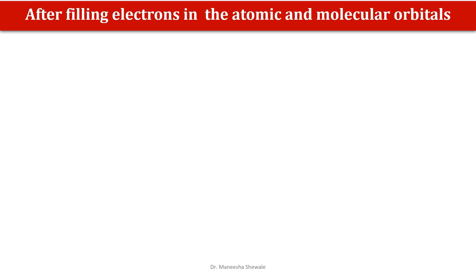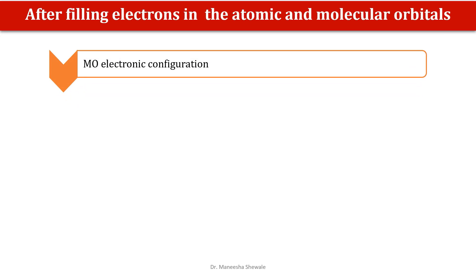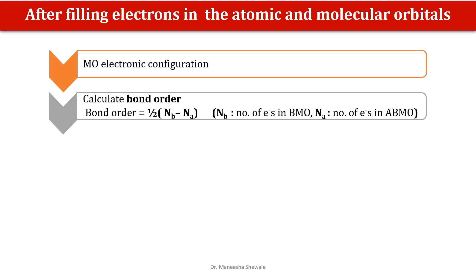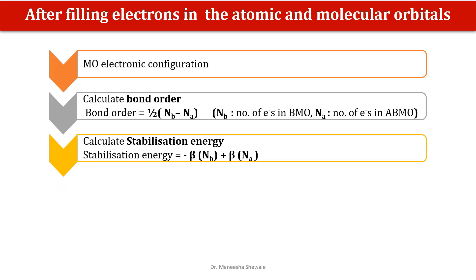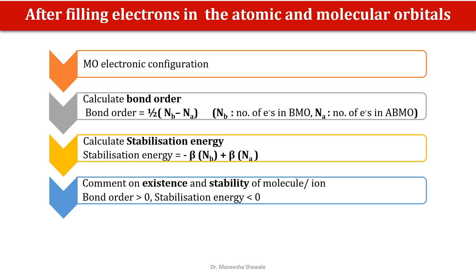After the electrons are filled in the atomic and the molecular orbitals, the next step is to write down the MO electronic configuration. Then we calculate the bond order using the formula: bond order is equal to half into (Nb minus Na), where Nb is the number of electrons in the bonding molecular orbitals. Then we calculate the stabilisation energy: stabilisation energy is minus beta into Nb plus beta into Na. After calculating the bond order and the stabilisation energy, we can comment on the existence and stability of a molecule or ion.